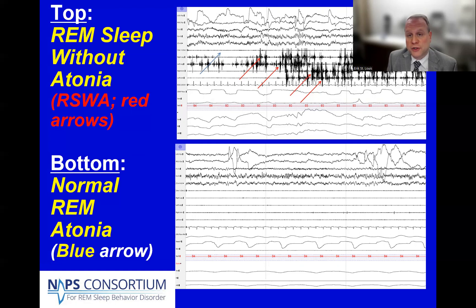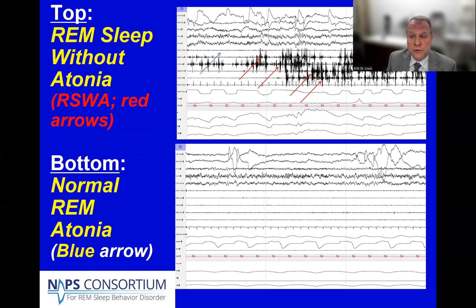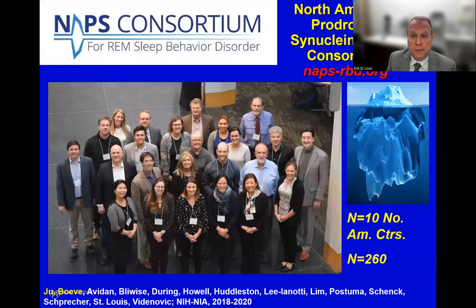The four muscle channels are recorded from the legs and the arms, from each one independently. By contrast, on the bottom, you see normal REM sleep atonia or paralysis with barely any registerable muscle activity. The examples clearly illustrate the distinction between the normal state and the patient with REM sleep behavior disorder.